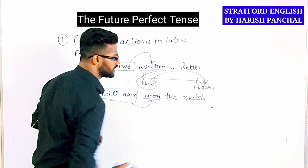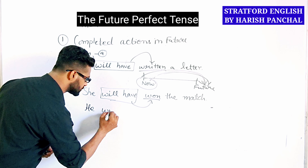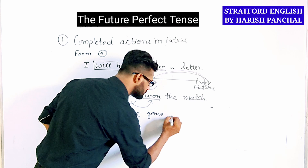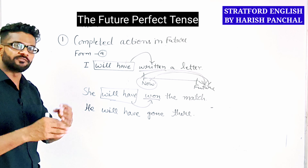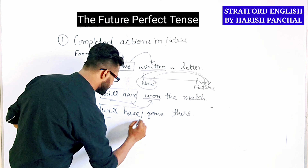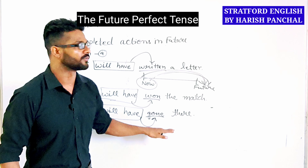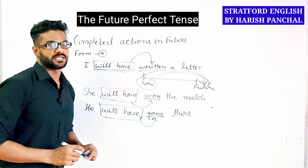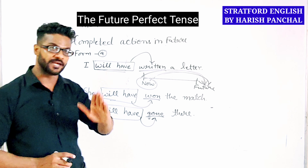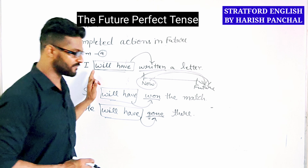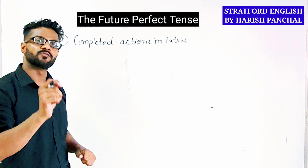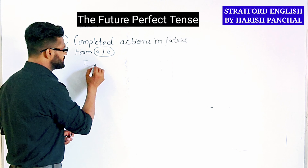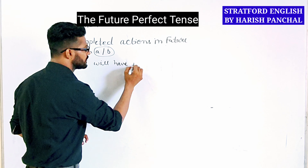These are the two forms and the two situations where we use the future perfect tense. One by one we will discuss all the situations and forms. First, we will discuss completed actions in the future and use form number one — 'will have' plus past participle. For example: 'I will have written a letter.' This means in the future I will have done something.